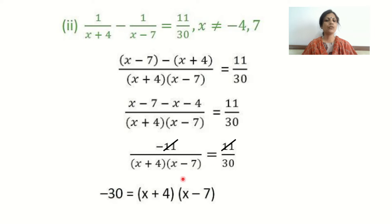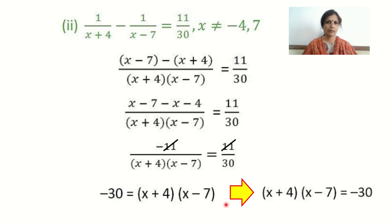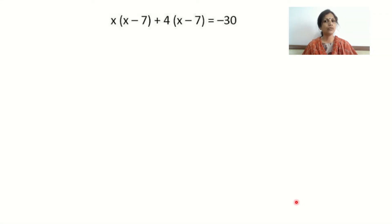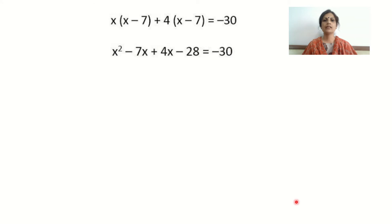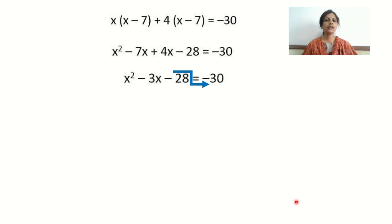Cross multiplying gives minus 30 equals x plus 4 times x minus 7. Expanding: x squared minus 7x plus 4x minus 28 equals minus 30, which simplifies to x squared minus 3x minus 28 equals minus 30. Shifting terms, we get x squared minus 3x minus 28 plus 30 equals 0, giving us x squared minus 3x plus 2 equals 0, which is a perfect quadratic equation.